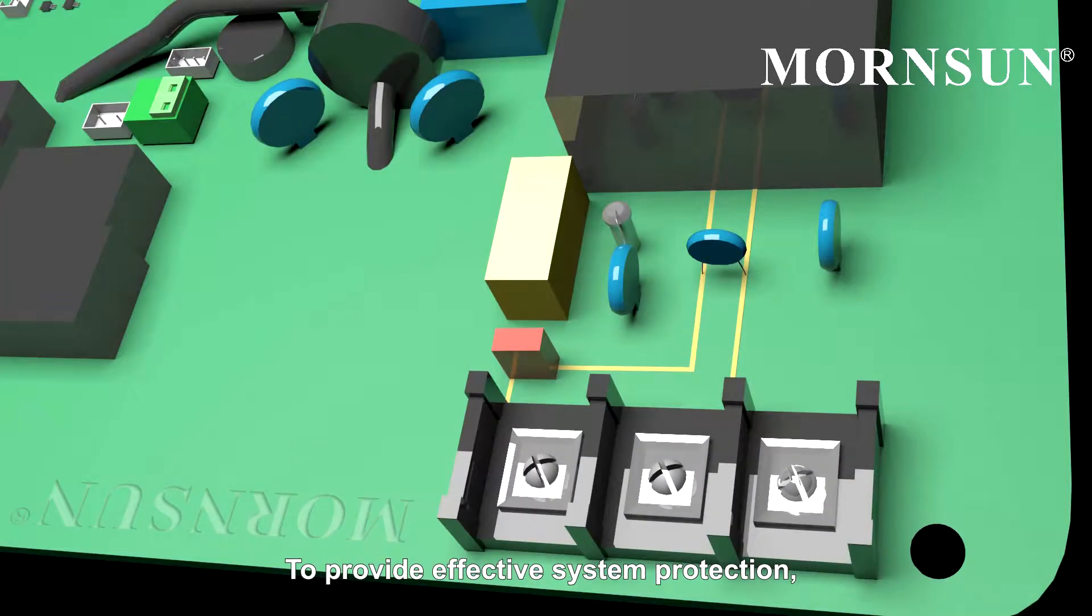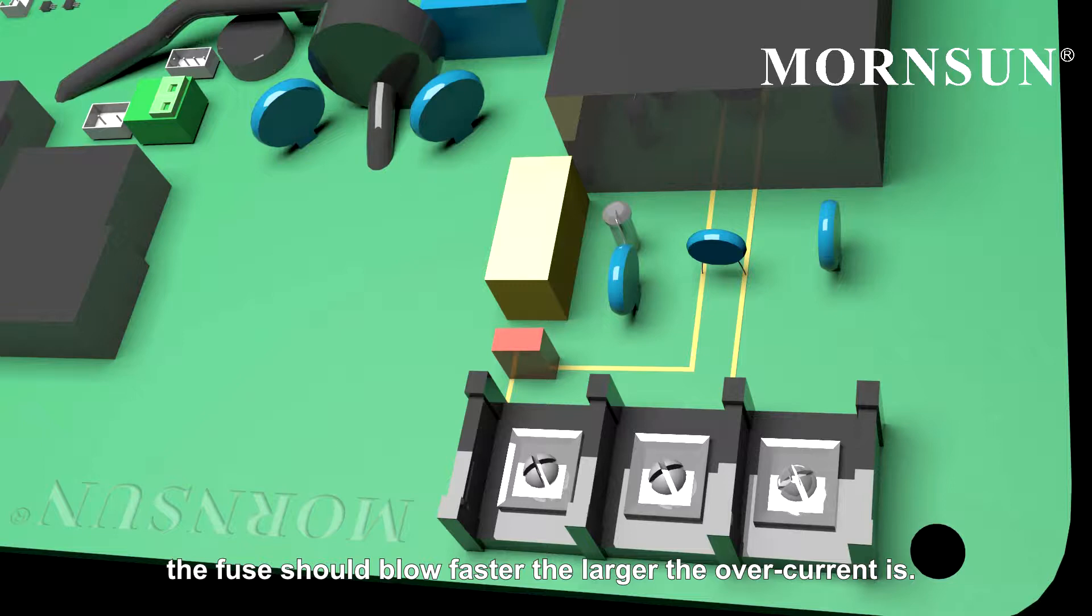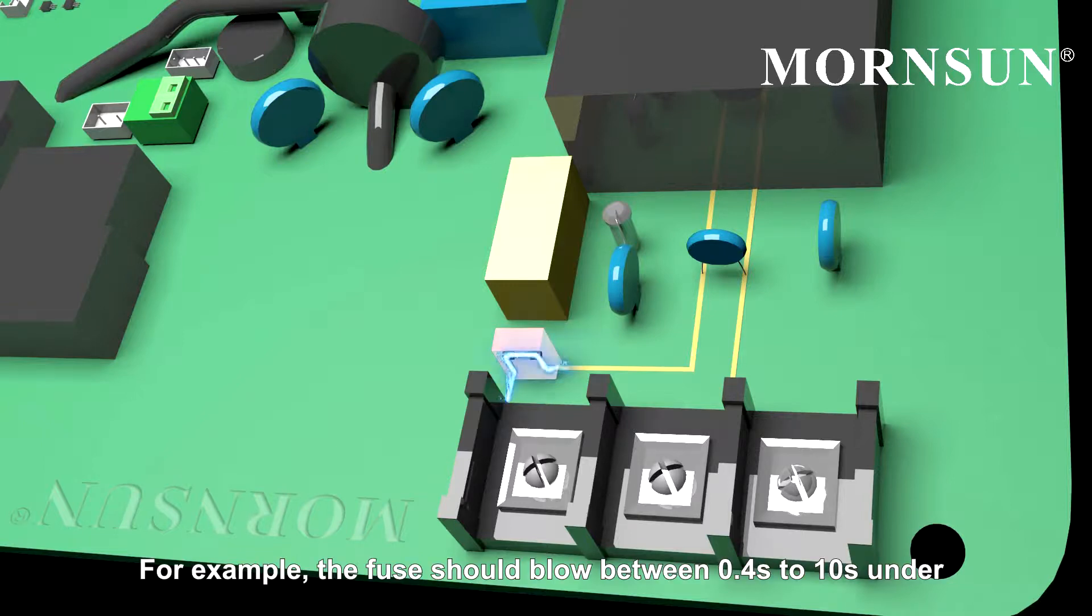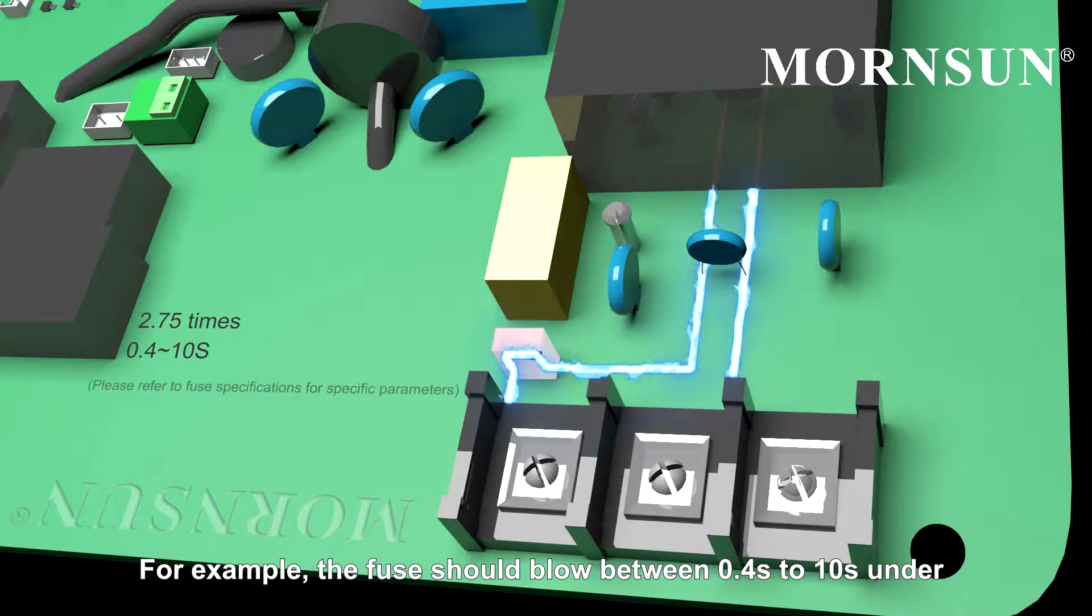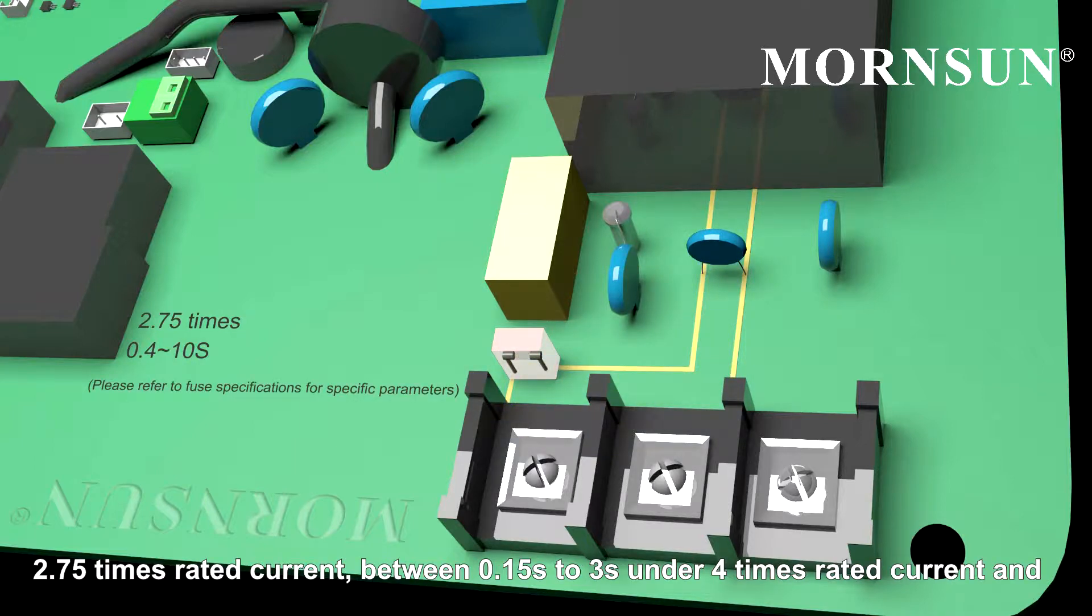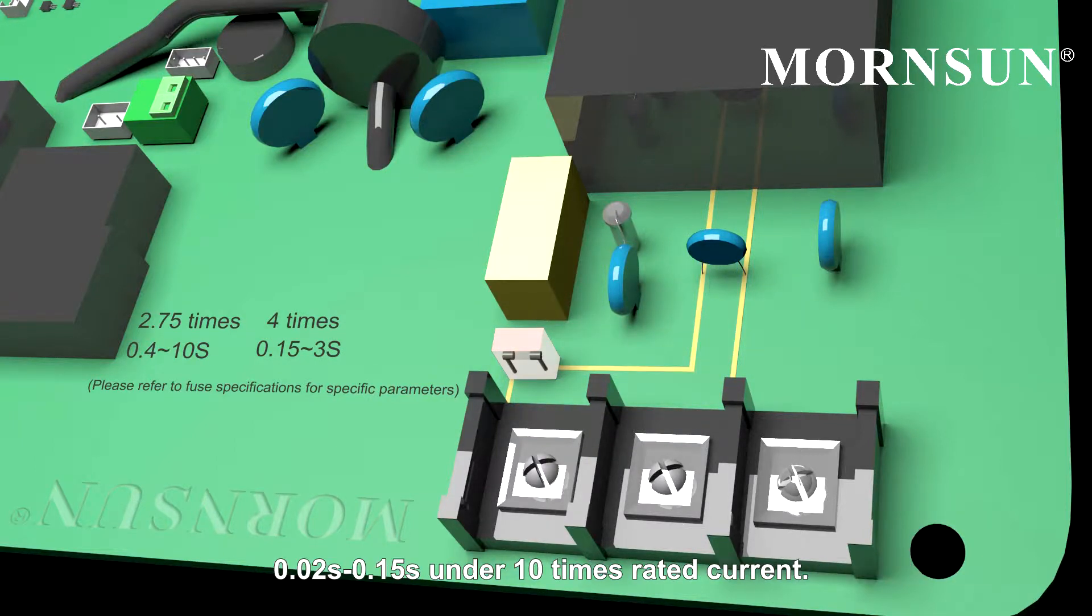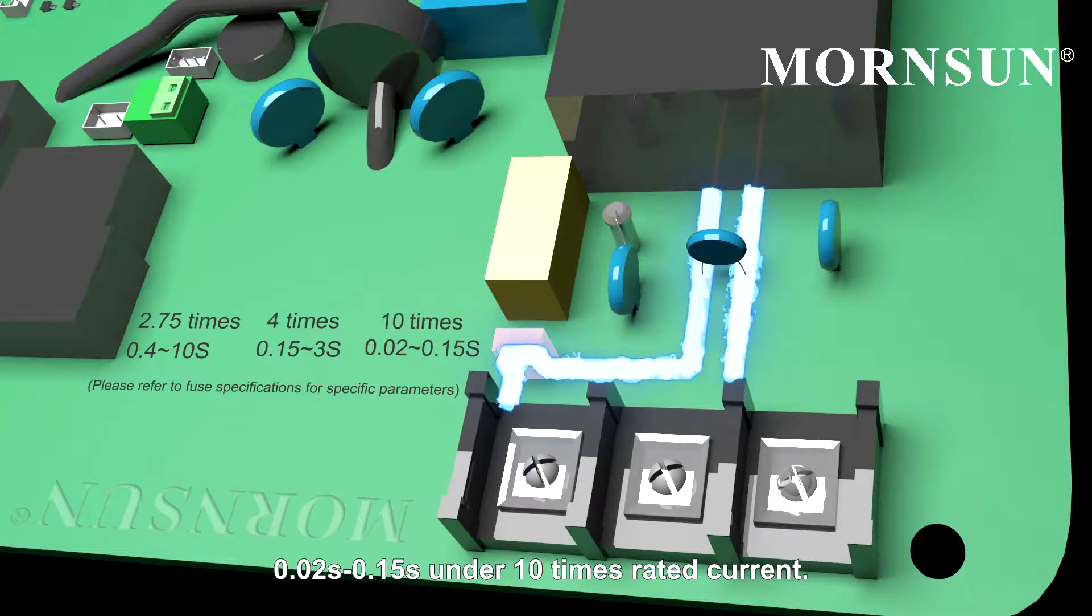To provide effective system protection, the fuse should blow faster the larger the overcurrent is. For example, the fuse should blow between 0.4 seconds to 10 seconds under 2.75 times rated current, between 0.15 seconds to 3 seconds under 4 times rated current, and 0.02 seconds to 0.15 seconds under 10 times rated current.